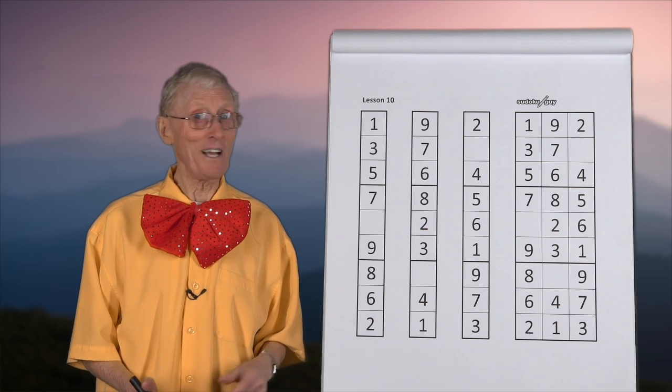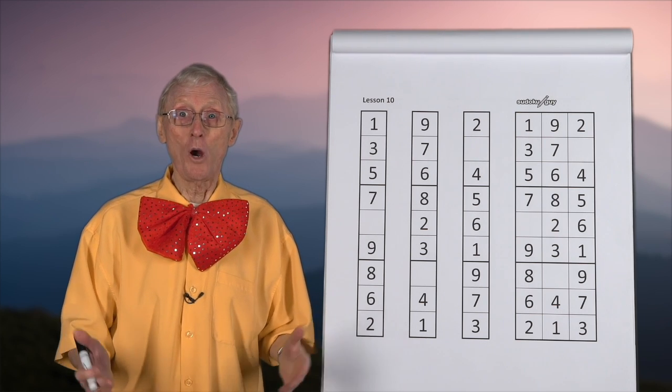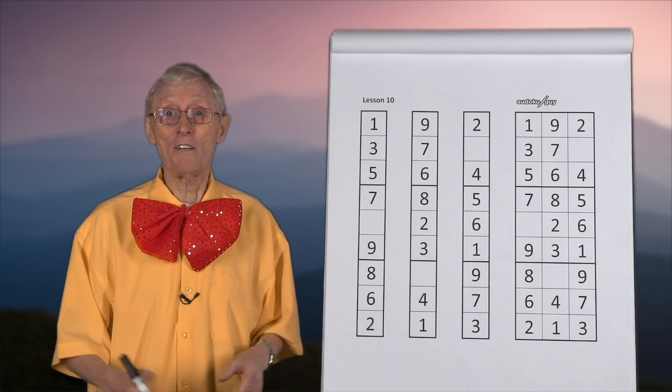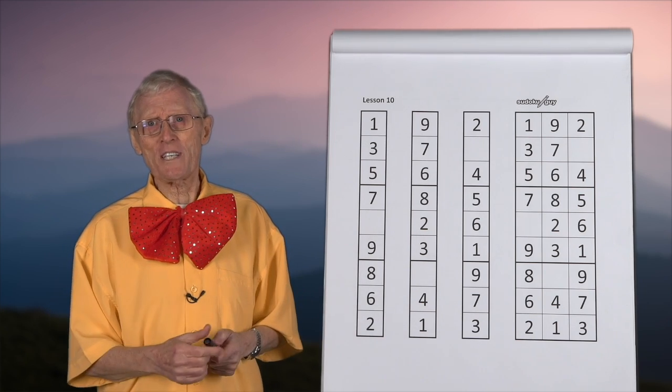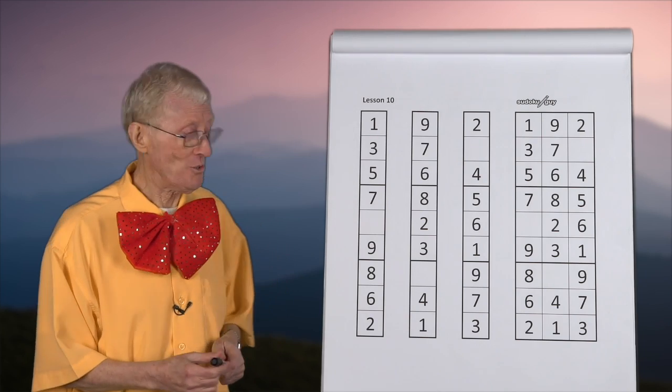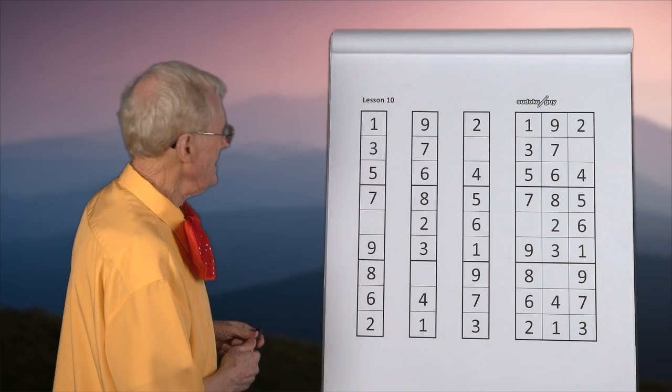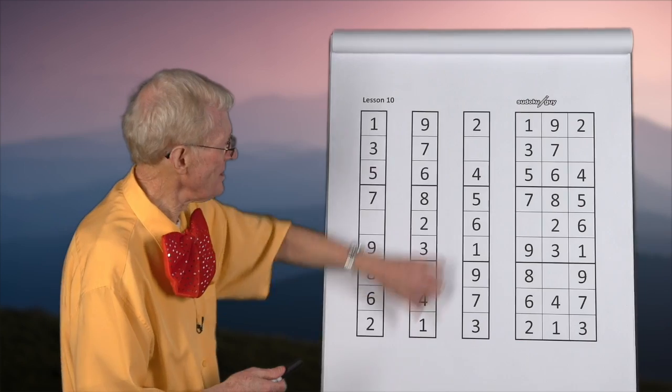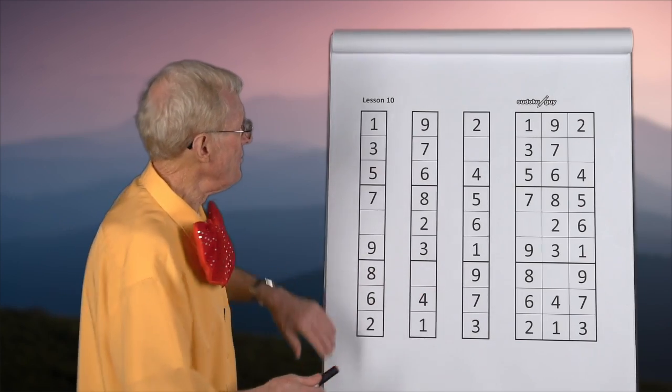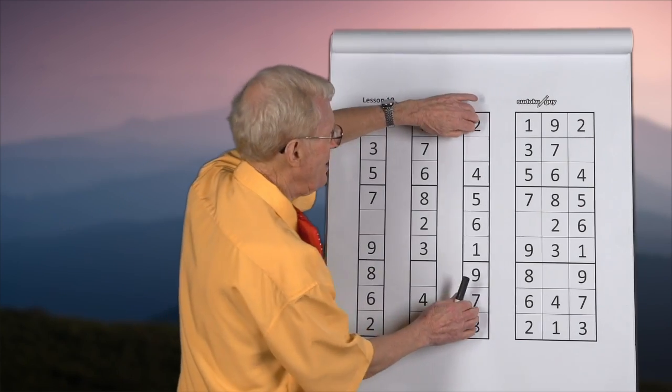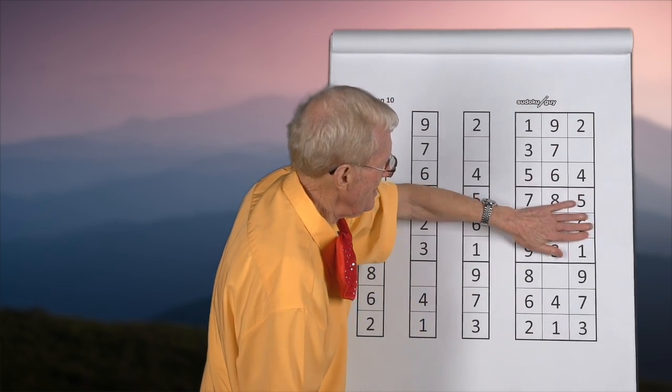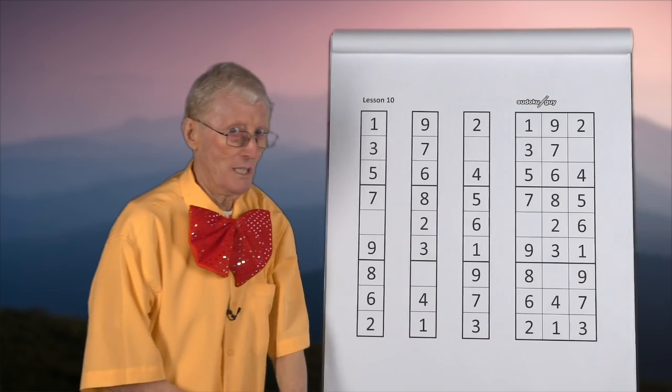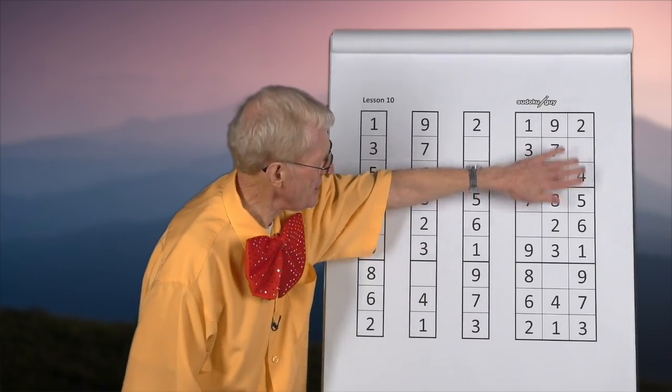Hello boys and girls, here we are again, Robin the Sudoku Guy, with yet another session involving learning how to solve number problems so that we can do Sudoku puzzles. Now, here we have three columns, and if you join these three columns together, it makes up three vertical blocks. That's what we call these, vertical blocks.